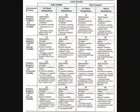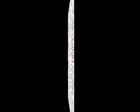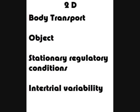Using a table of Gentile's taxonomy, the action of dribbling a soccer ball during a game would be classified as 2D because it involves body transport with an object over stationary regulatory conditions, and the game provides intertrial variability.